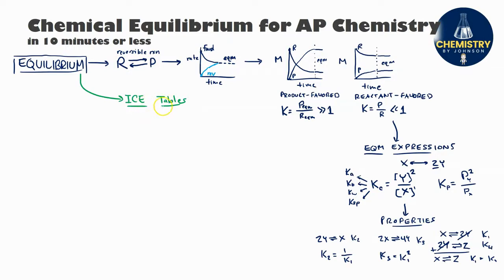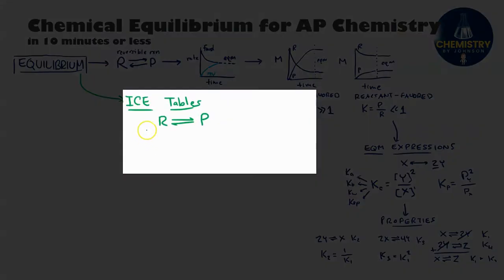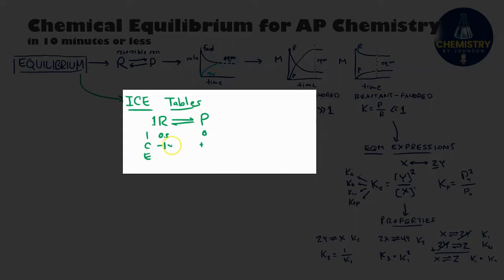For quantitative calculations of reactant and product amounts in an equilibrium reaction, there's a helpful method called an ICE table. To set up an ICE table, take your reversible equilibrium reaction and set up three rows: I (initial), C (change), and E (equilibrium). Fill in the initial amounts of reactants and products — usually at the beginning there are some reactants but no products. Reactants decrease, so the change column gets a minus sign; products increase with a plus sign. These changes follow stoichiometric ratios, so at equilibrium, reacted amount is 0.5 minus x and product amount is simply x.